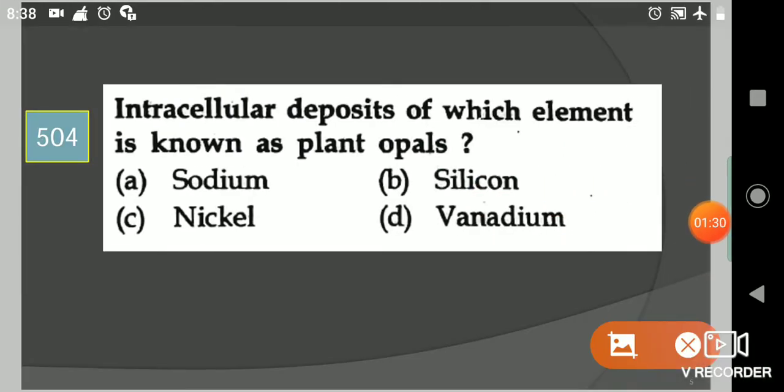Next question: Intracellular deposits of which element is known as plant opals? Your options are sodium, silicon, nickel, vanadium. Your answer is option B, silicon.